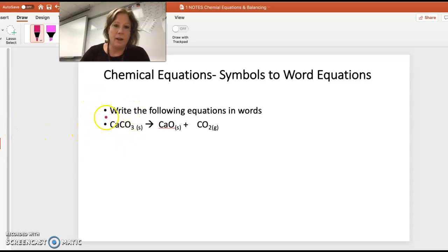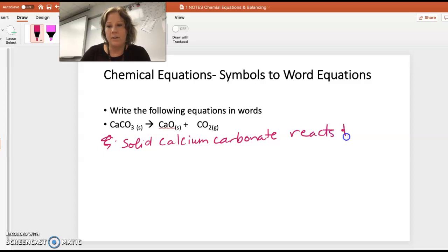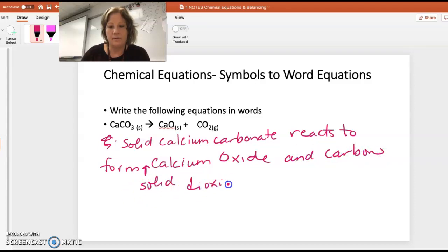Now we can go the other direction. We have the chemical equation but now write it as a word equation. I would say something like solid calcium carbonate reacts to form or produce calcium oxide solid and carbon dioxide gas. So you should be able to go back and forth between the word equation and chemical equation.